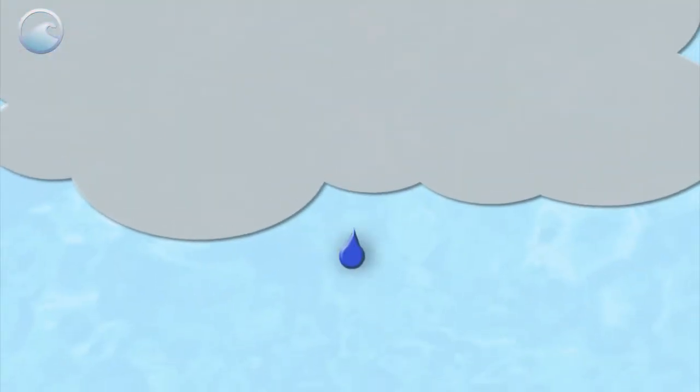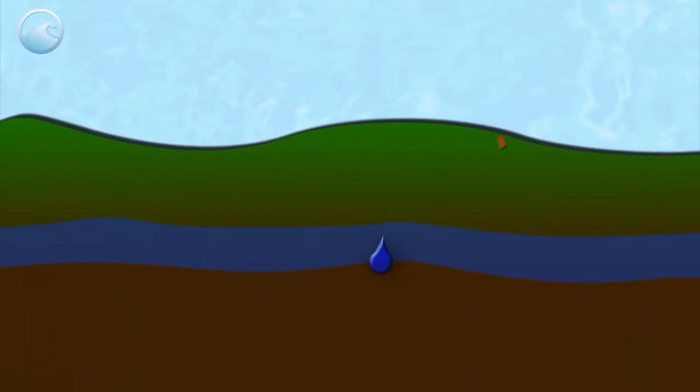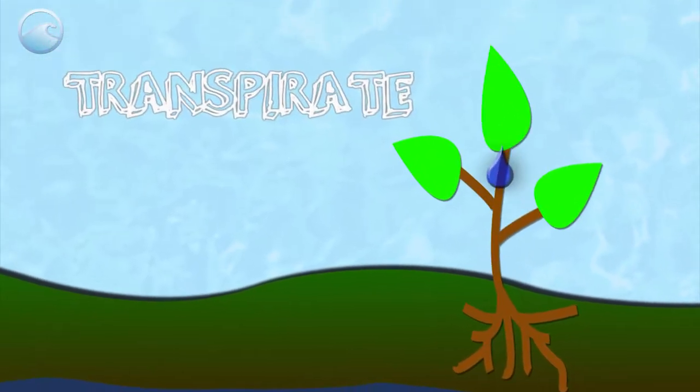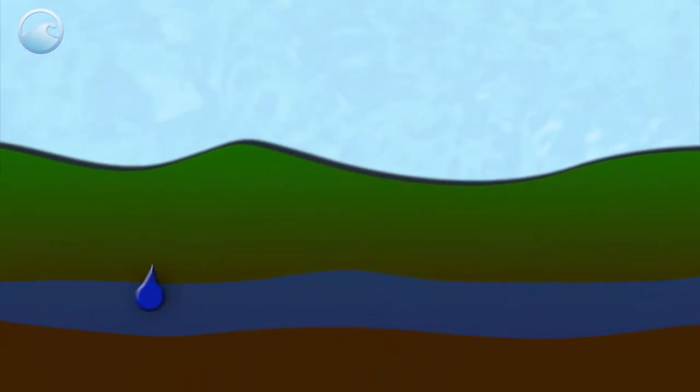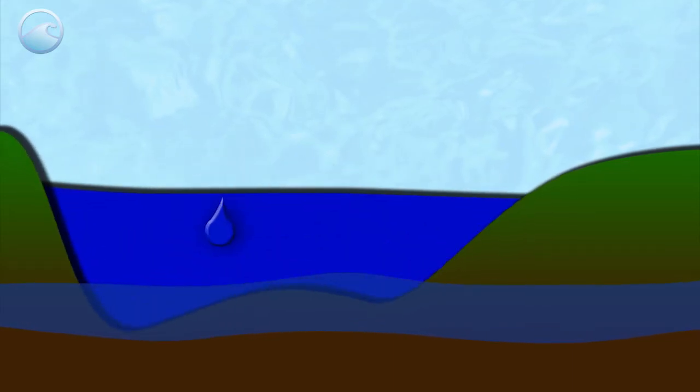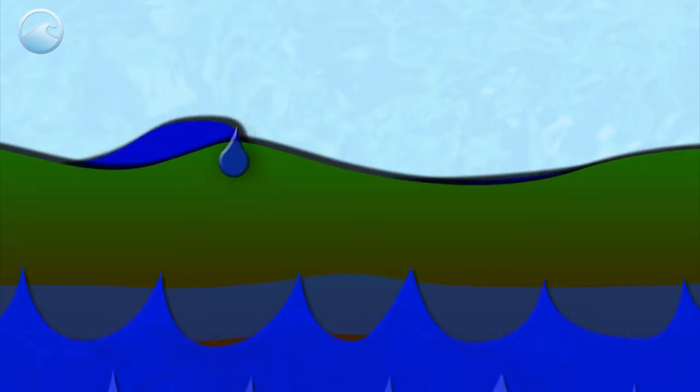Or rain can seep into the ground and become groundwater, where it's taken up by plants. It can then transpire to gas directly through the leaves and return to the atmosphere. Or instead of being taken up by the plant, the groundwater can work its way up to a lake, river, spring, or even the ocean.